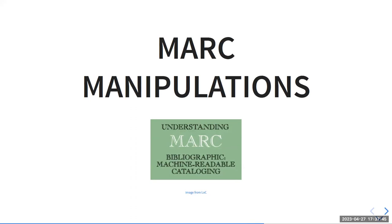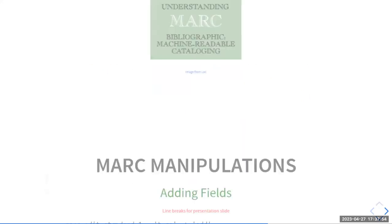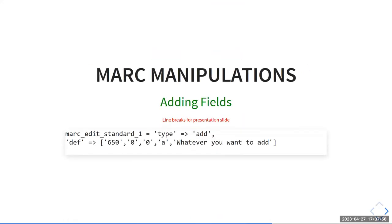The mark manipulations section gets complicated pretty quickly, so it has its own dedicated section. This is an example of the config. To add a field, you say mark_edit_standard followed by a number — number one for the first manipulation. Each time you want to add to a list of things to do, you increment that number. So mark_edit_standard_1 is the first thing to do to the mark record, mark_edit_standard_2 is the second. In this example, the type is 'add', the definition is a 650 with indicator one of zero and indicator two of zero, and subfield A with the value you want added to the mark record.